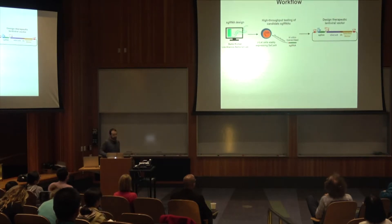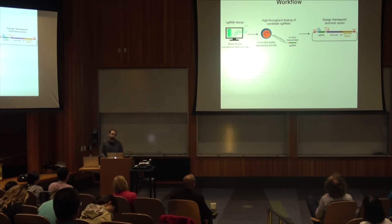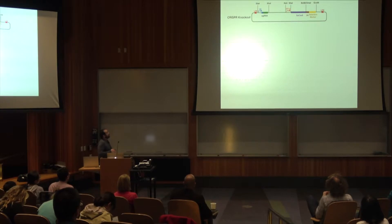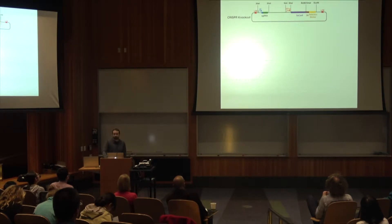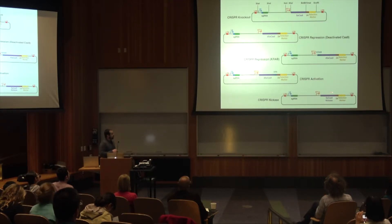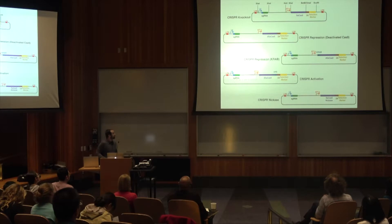We have six guide RNAs that can cleave HIV, and next we wanted to see how they worked in a lentiviral vector individually. We designed our own lentiviral vector expressing both the enhanced specificity SA-Cas9 and the wild-type SA-Cas9, flanking all major regions with unique restriction sites so we could modify the vector as needed. From this original vector we also made two CRISPR repression vectors, a CRISPR activation vector, and a NIC-ACE vector — available if anyone is interested.